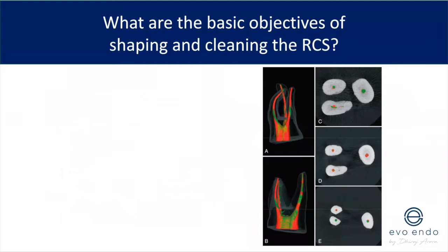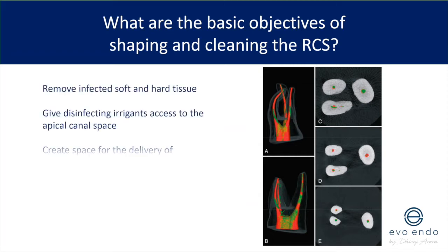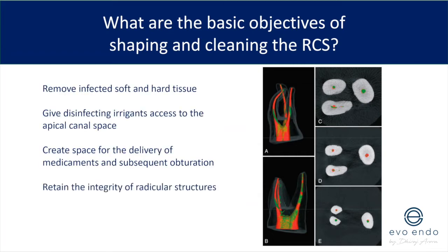What are the basic objectives of shaping and cleaning the root canal system? Fundamentally it comes down to four main things. Number one: removing infected soft and hard tissue — this includes both infected dentine as well as necrotic or infected pulp tissue.